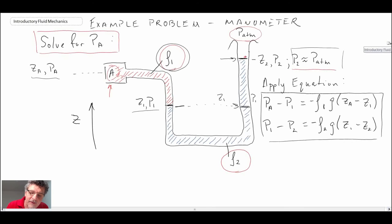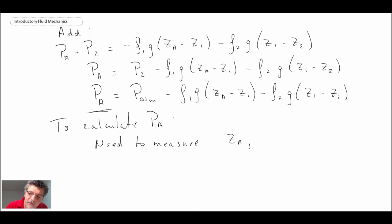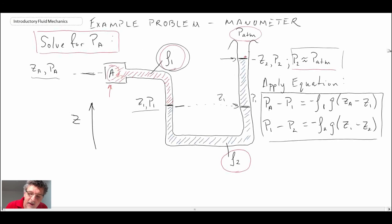Given the geometry of this manometer, we would know z_A exactly. And then the other things that we need to measure are interface z₁ and z₂. So let's take a look back: we need to be able to measure this interface here and we need to be able to measure that interface there.